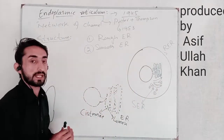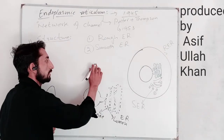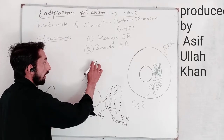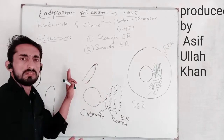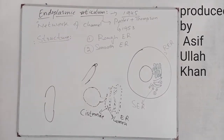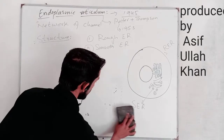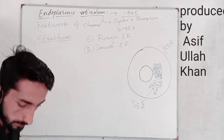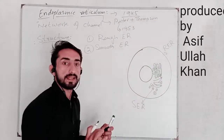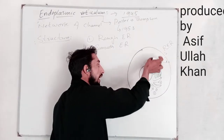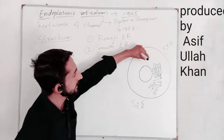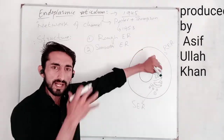The smooth endoplasmic reticulum has a tubule-like structure — tubules are tube-like — and no ribosomes are present on its surface. In contrast, the rough endoplasmic reticulum is made up of cisternae, and on the surface of these cisternae, ribosomes are attached. These are the ribosomes attached to the rough ER.